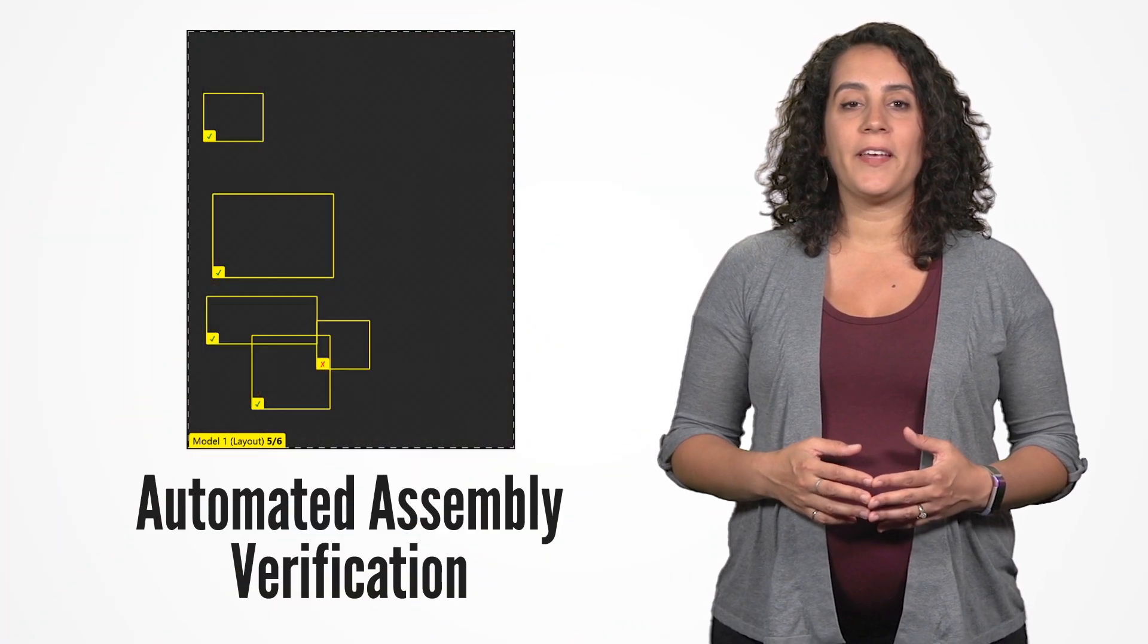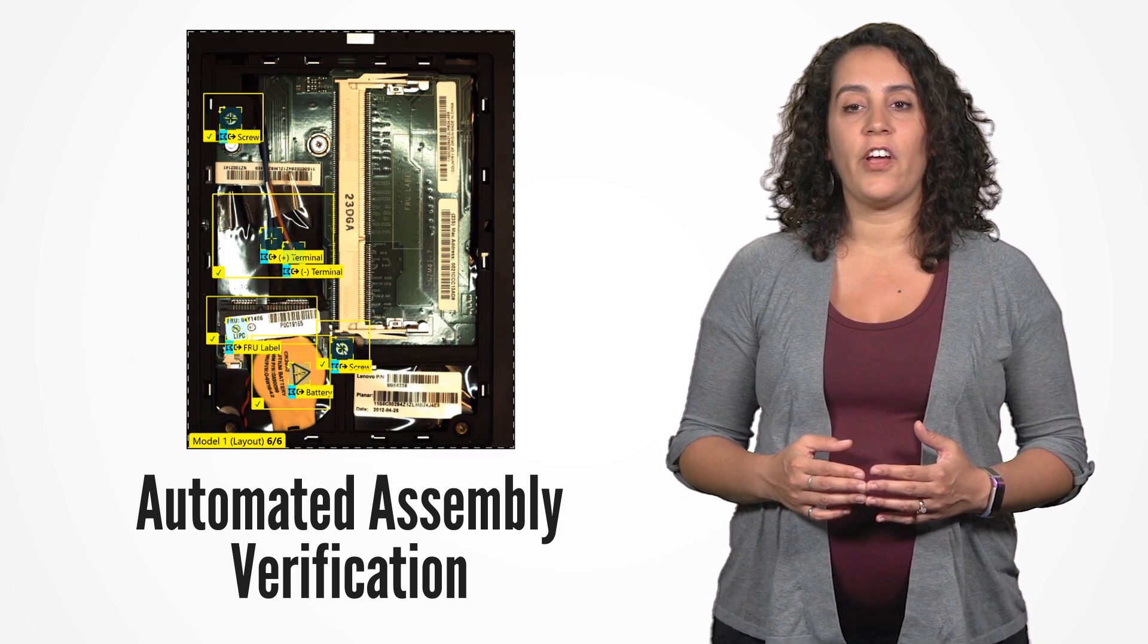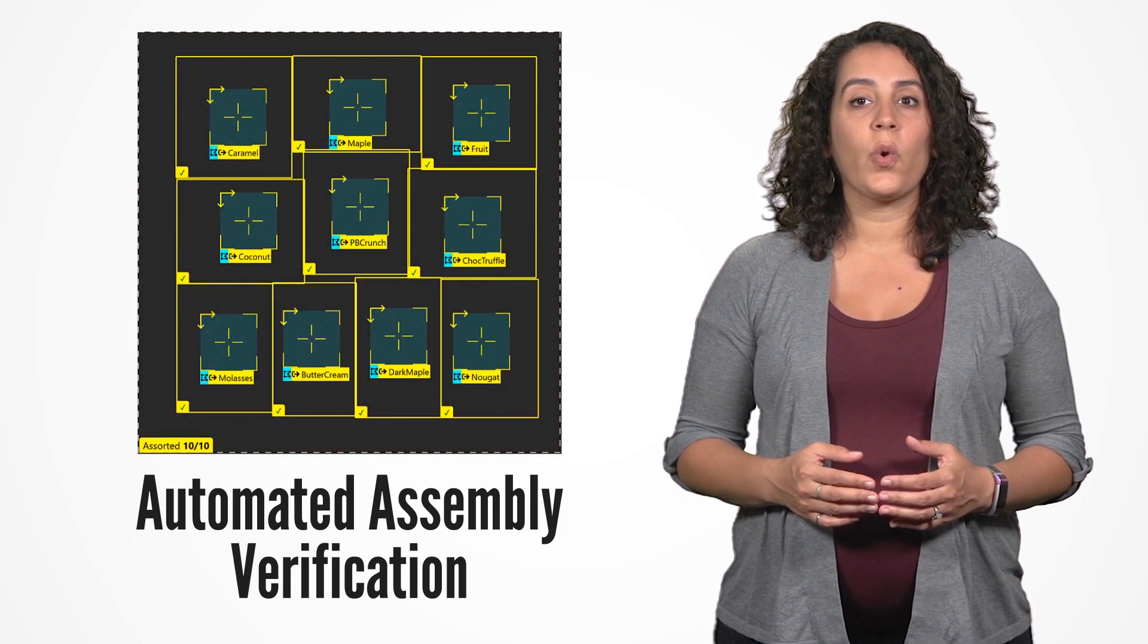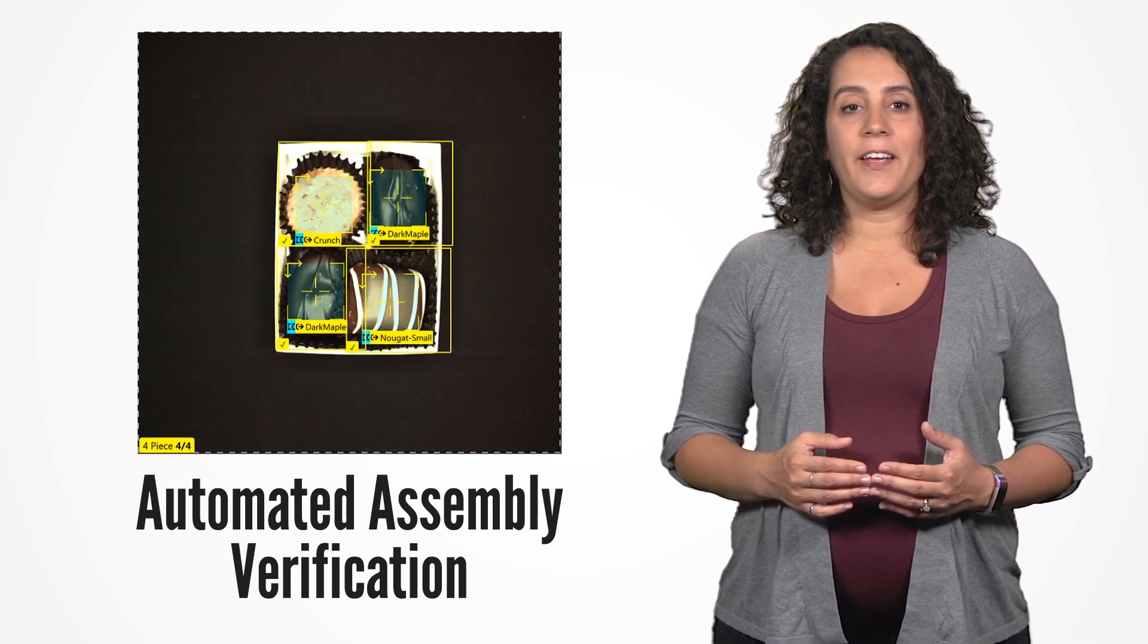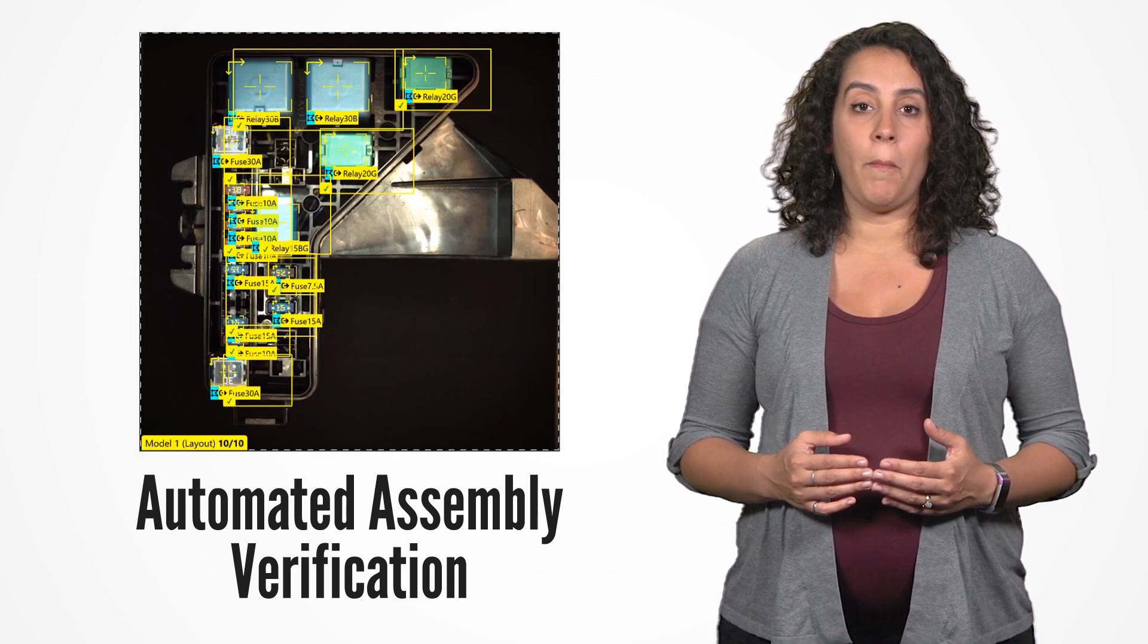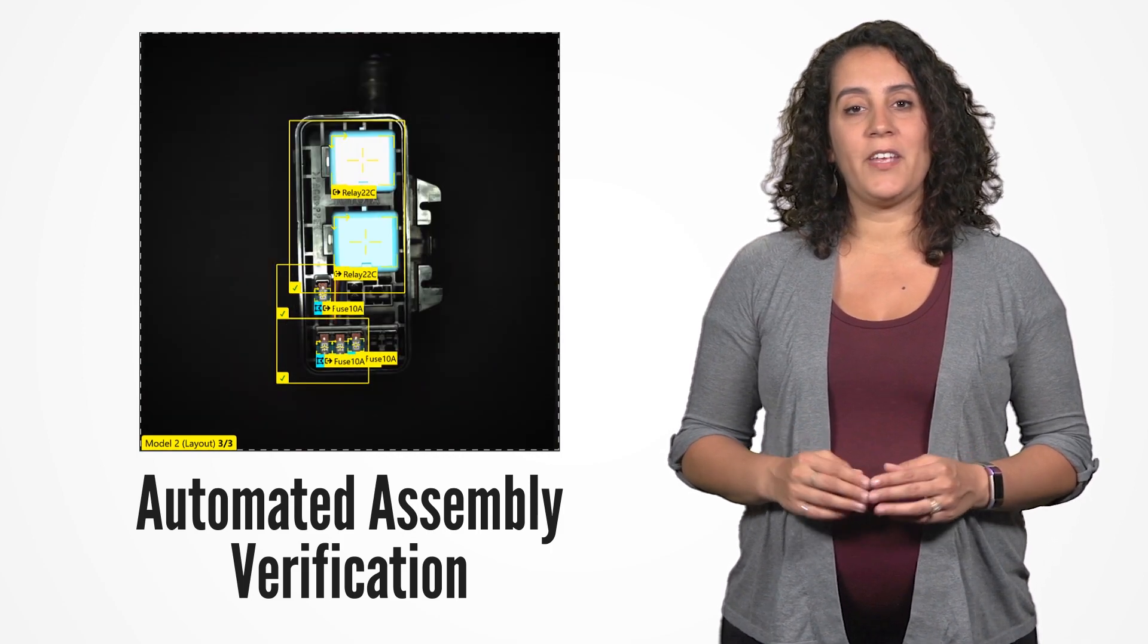Deep learning is now being used in applications where inspection has typically been done manually, like final assembly check. These tasks were once considered too difficult to automate. With a tool like deep learning, they can now be done with a vision system more consistently, more reliably, and faster than manual inspection.